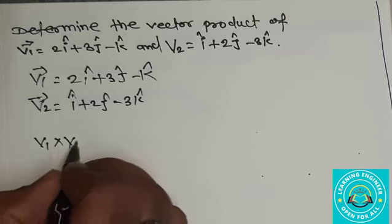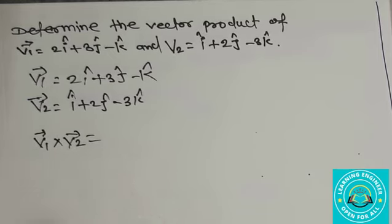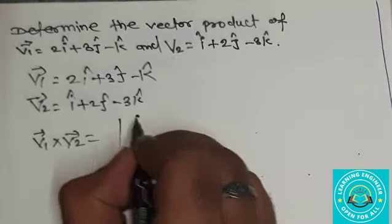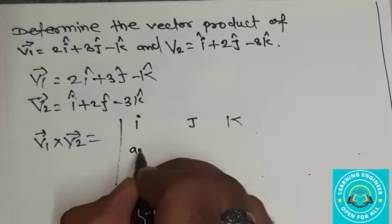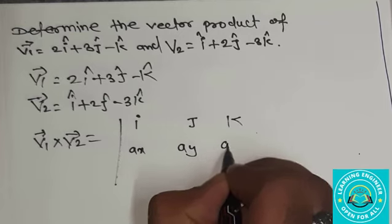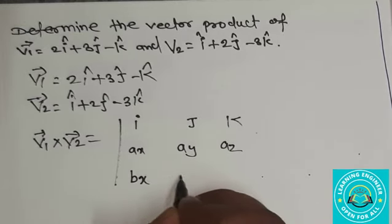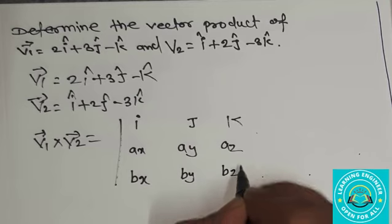So, v1 cross v2 is equal to formula: i, j, k. Here we write ax, ay, az, bx, by, bz.